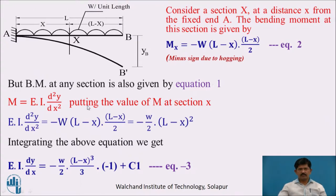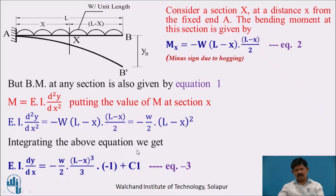From equation 1, M = EI·d²y/dx². Substituting the value of M, we get EI·d²y/dx² = −(W/2)(L − x)². Integrating this equation, we get EI·dy/dx = −(W/2)·(L − x)³/(3·(−1)) + C₁, which simplifies to EI·dy/dx = (W/6)(L − x)³ + C₁ (equation 3). C₁ is the constant of integration.